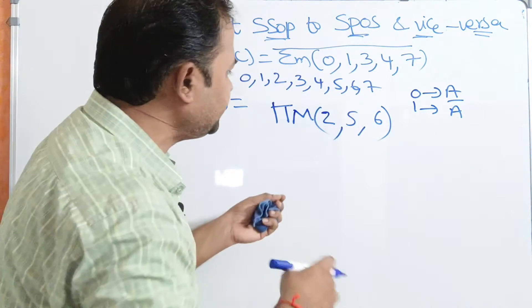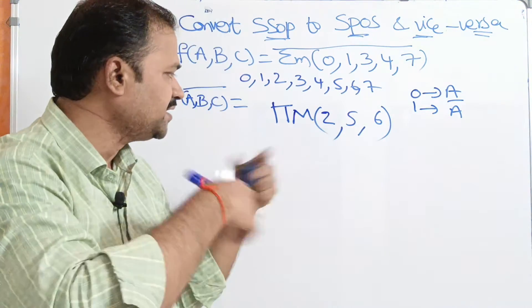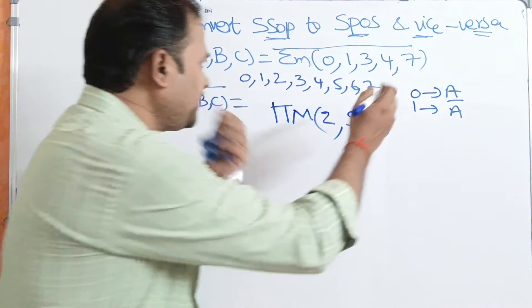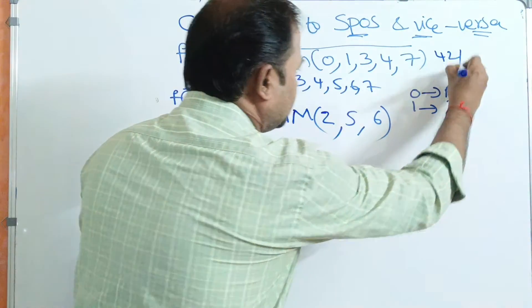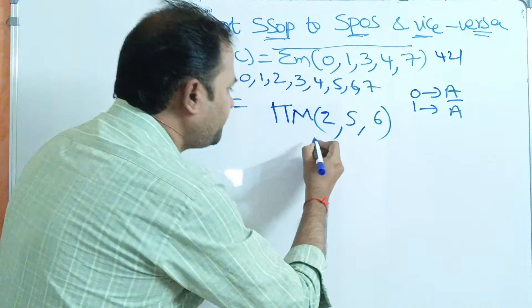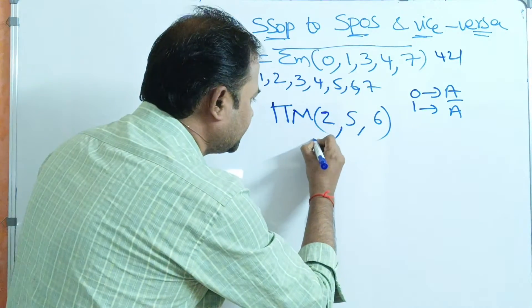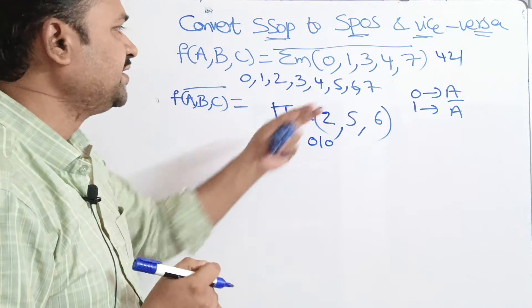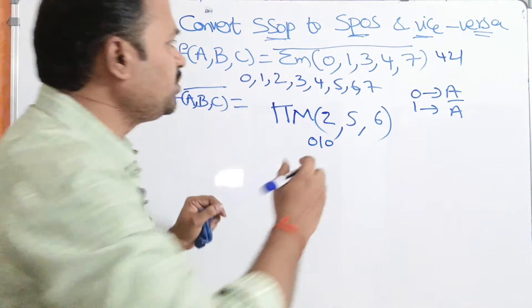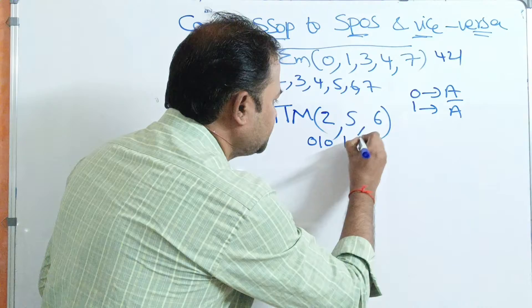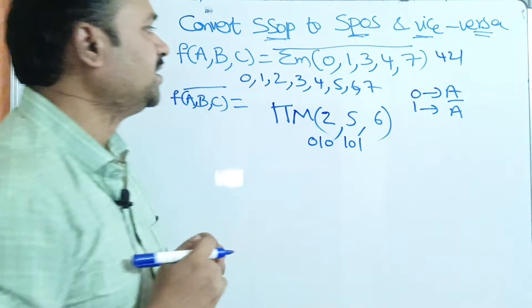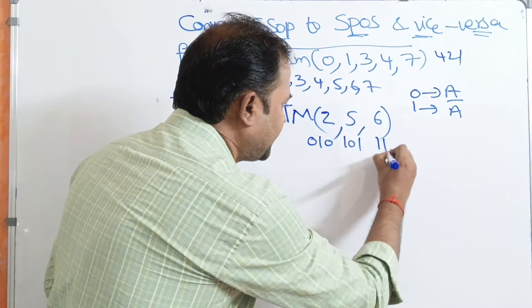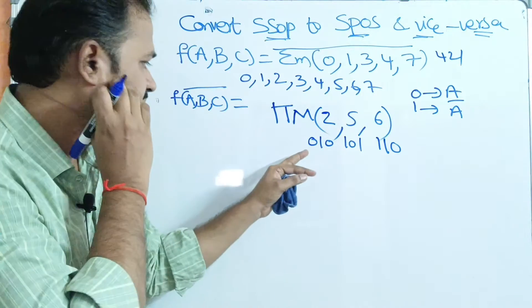We know how we can represent these decimal numbers in binary notation. How we can represent 2 in binary notation? 0, 1, 0. Next, how to represent 5? 1, 0, 1. How we can represent 6? 1, 1, 0.